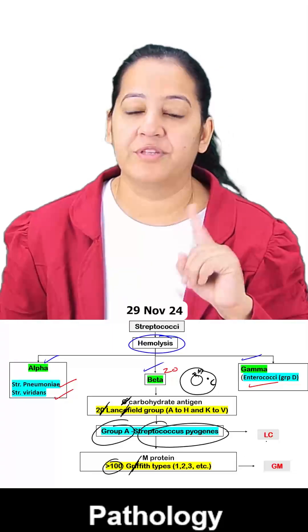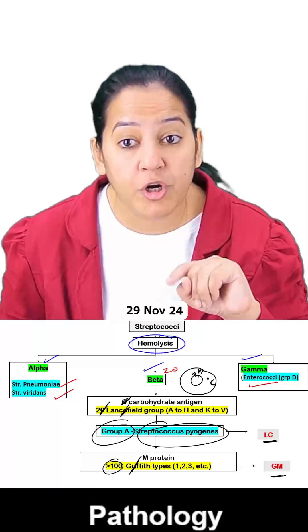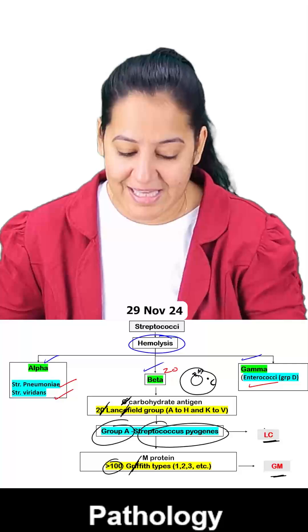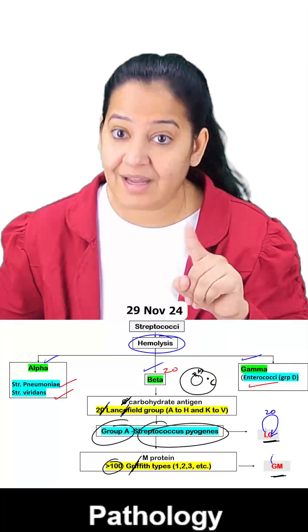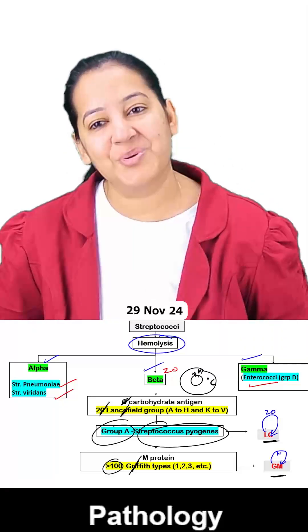I have a mnemonic for you: Lucknow City, Good Morning, that is LCGM. Lancefield has done classification based on group C carbohydrate into 20 types, and Griffith has done classification based on M protein into 100 types.